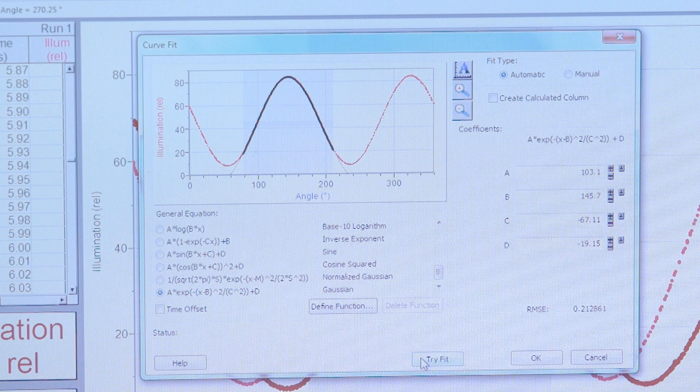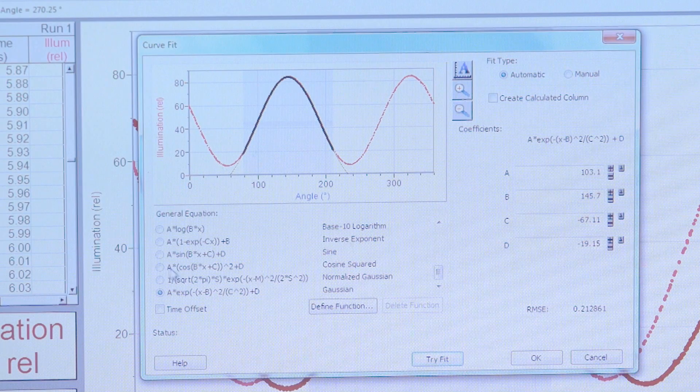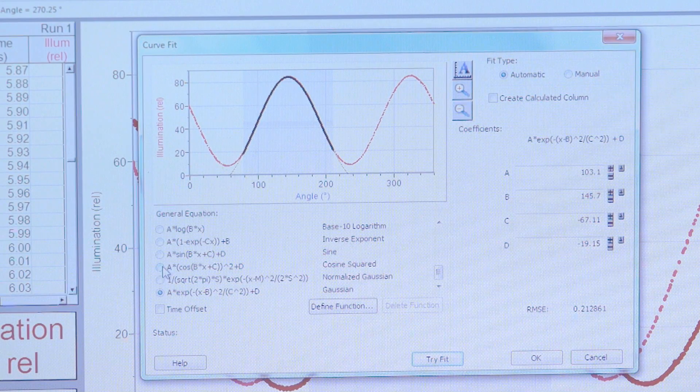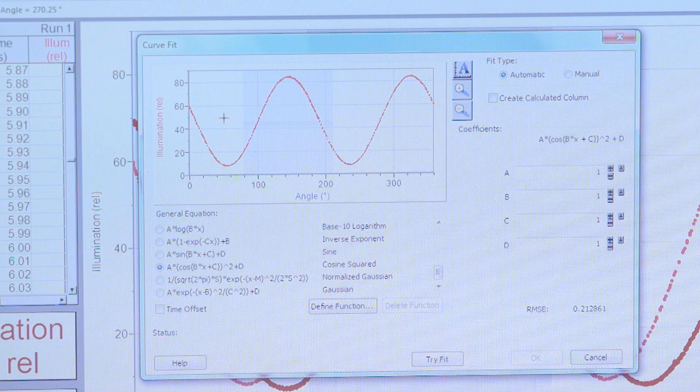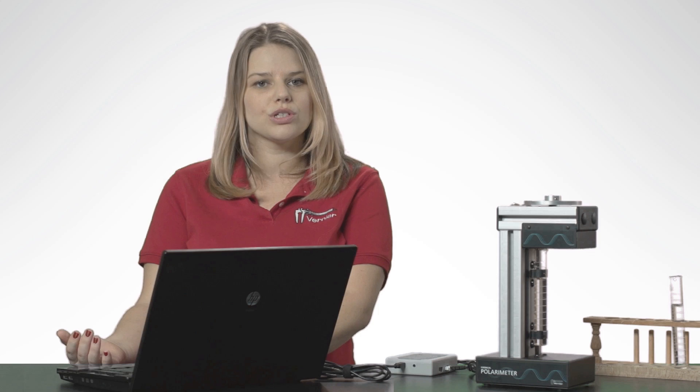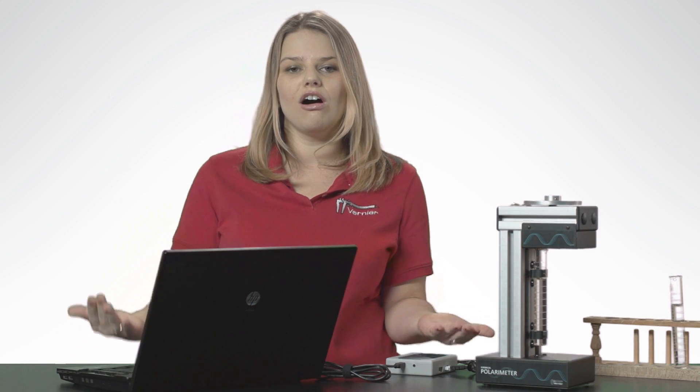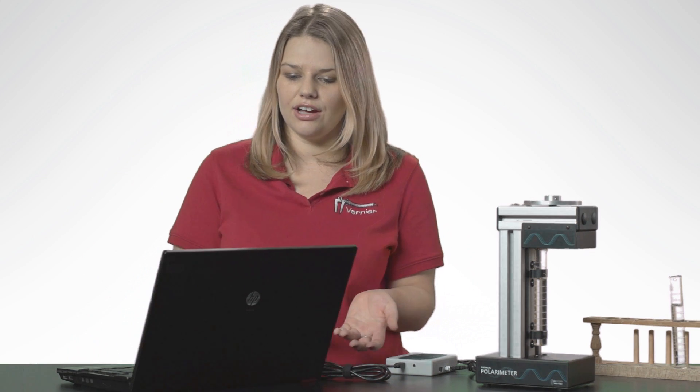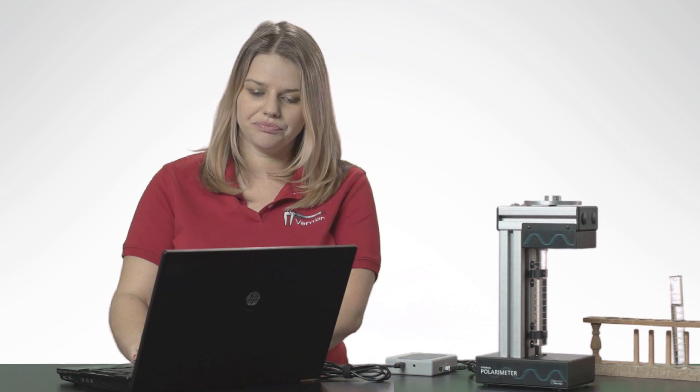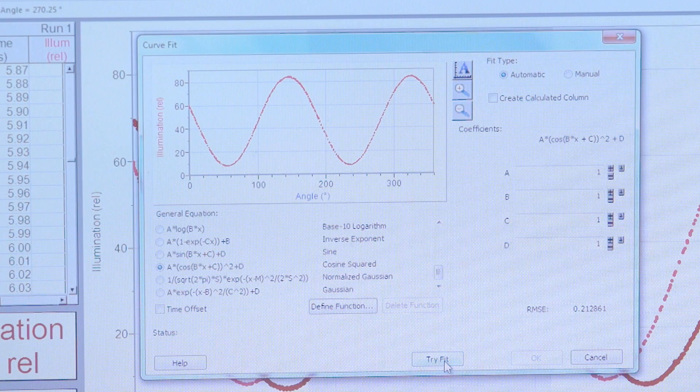So to do a cosine squared fit, simply select the cosine squared fit equation from the menu. Now make sure you deselect any region in the graph that's been selected, because the cosine squared fit takes into account all the data you've collected. And that's why it's the most accurate interpretation of your data. Select Try Fit.